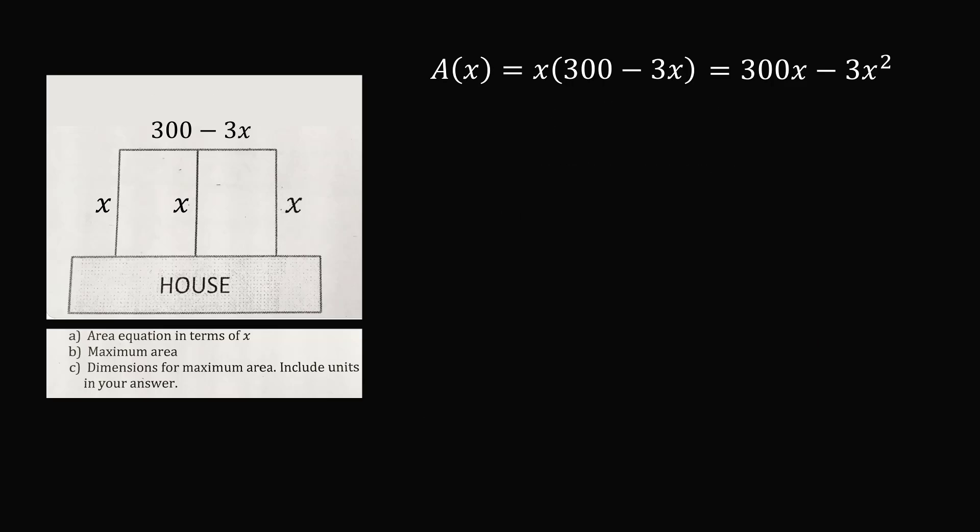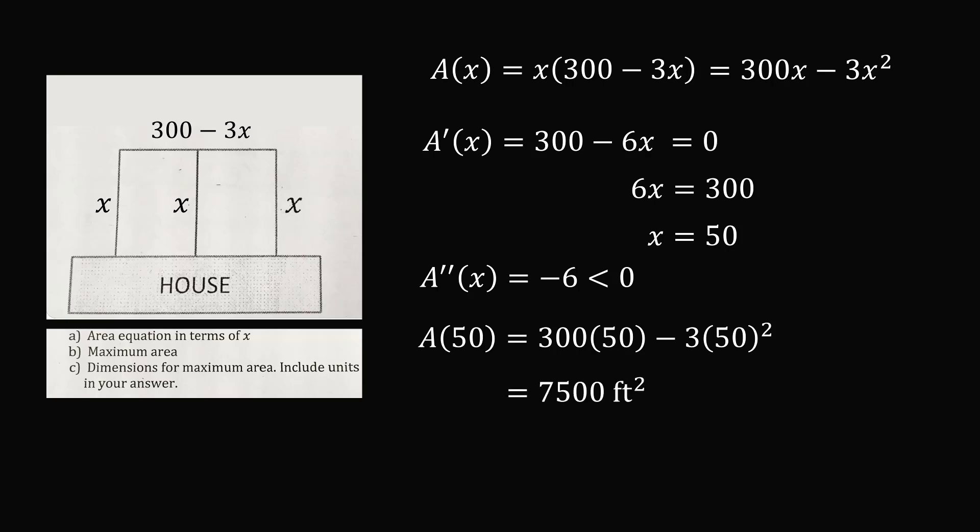I will now illustrate a final approach, which is the most straightforward approach, using calculus. Take the derivative of the area function. So A'(x) is equal to 300 minus 6x. Let's set this equal to 0. So we have the equation 6x is equal to 300, so x is equal to 50 feet. Take the second derivative, which will be equal to minus 6, and this is less than 0, so we know we have a maximum. So we know the maximum area happens when x is equal to 50. Substituting into the area function, we get that the area is a maximum value at 7,500 square feet. One dimension is x is equal to 50 feet, and the other dimension is 300 minus 3x, so the other dimension is 150 feet.